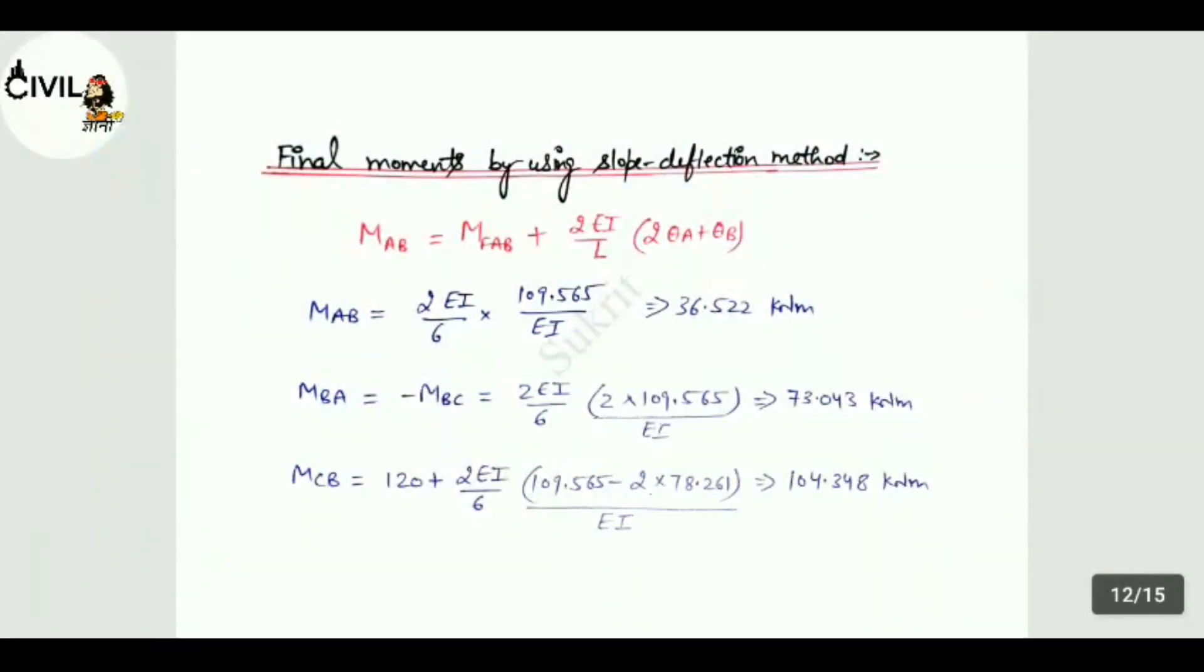Now for the last step, we calculate final moments by using slope deflection method. For example, to find MAB: this is MF_AB plus 2EI/L into 2θ_A plus θ_B. For AB it's 2θ_A plus θ_B, for BA it's θ_A plus 2θ_B. So for MAB, MF_AB is zero, θ_A is zero. So 2EI/L into, means 2EI/6 into 109.565 divided by EI. MAB value is 36.522 kNm.